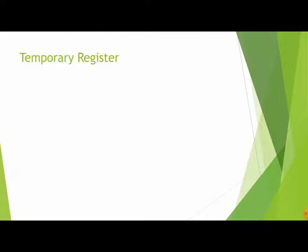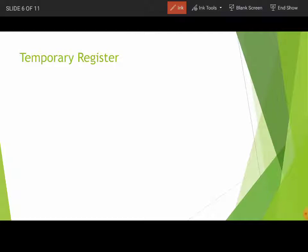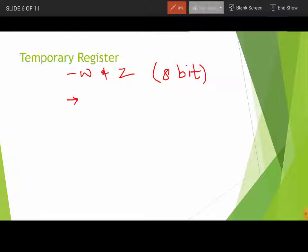Next is the temporary register. Looking at the architecture of the 8085, there are two temporary registers named W and Z, each 8-bit. As the name suggests, these registers act as temporary memory during arithmetic and logical operations; the microprocessor uses them to store intermediate results. Only the microprocessor can access these temporary registers — the programmer cannot access them.